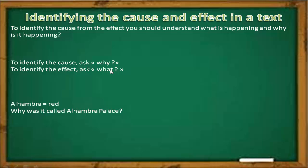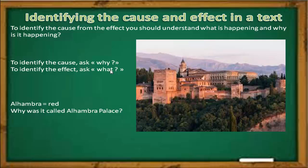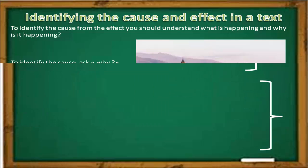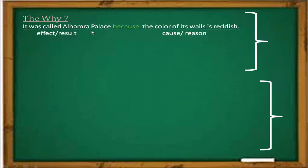To identify the cause, just ask the question 'why.' To identify the effect, just ask the question 'what.' Look at this picture — I know you can recognize it since you have already dealt with it in earlier lessons. It's Alhambra Palace in Granada, Spain. If you take a look at its walls, you see that the color is reddish. Can you guess why it was called Alhambra Palace? It was called Alhambra because the color of its walls is reddish.